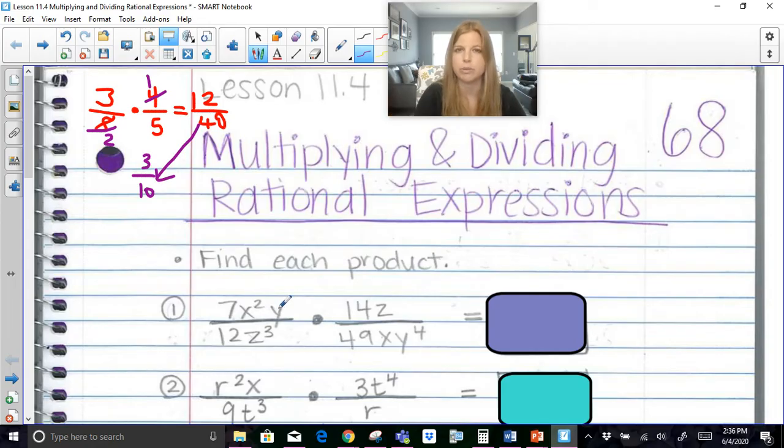Now you could do this in any kind of order you want. I'm just gonna go by my numbers first, my coefficients, and then my variables. So what I would see here is 7 and 49 simplify to 1 over 7 because they're both divisible by 7. And 14 and 12 are divisible by 2. So 14 is going to become a 7 and 12 is going to become a 6.